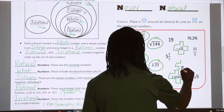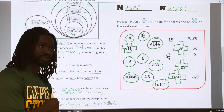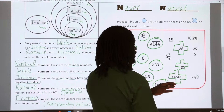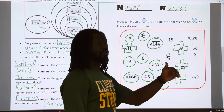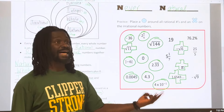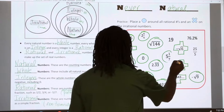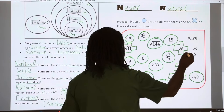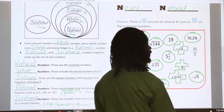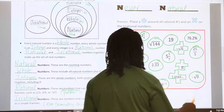Zero is also rational. 2.33 repeating is rational because it's a repeating decimal. 4.3 is rational. 4 times 10 to the negative one equals 0.4, which is rational. Pi is 3.14... with a bunch of random numbers behind it — no pattern — so pi is irrational. The negative square root of 9: the square root of 9 is 3, so the opposite is negative 3, which is rational. Five-sevenths is rational. 19 is rational. 72.6 is rational. And 25 over 5 equals 5, which is rational.